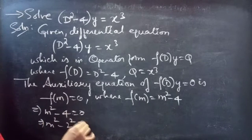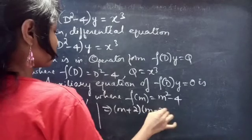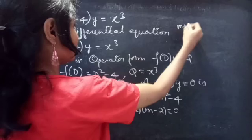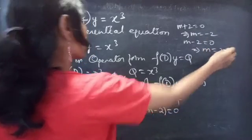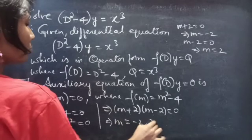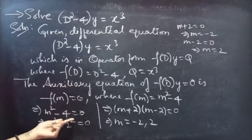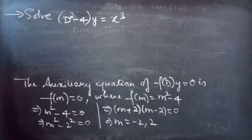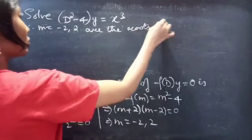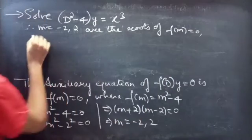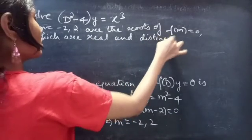We can write 4 as 2 squared. So this is of the a squared minus b squared form, which we write as (a plus b)(a minus b), giving (m plus 2)(m minus 2) equals 0. Equating each factor to 0: from m plus 2 equals 0, we get m equals minus 2; and from m minus 2 equals 0, we get m equals 2. So m equals minus 2 and plus 2 are real and distinct roots of our auxiliary equation.